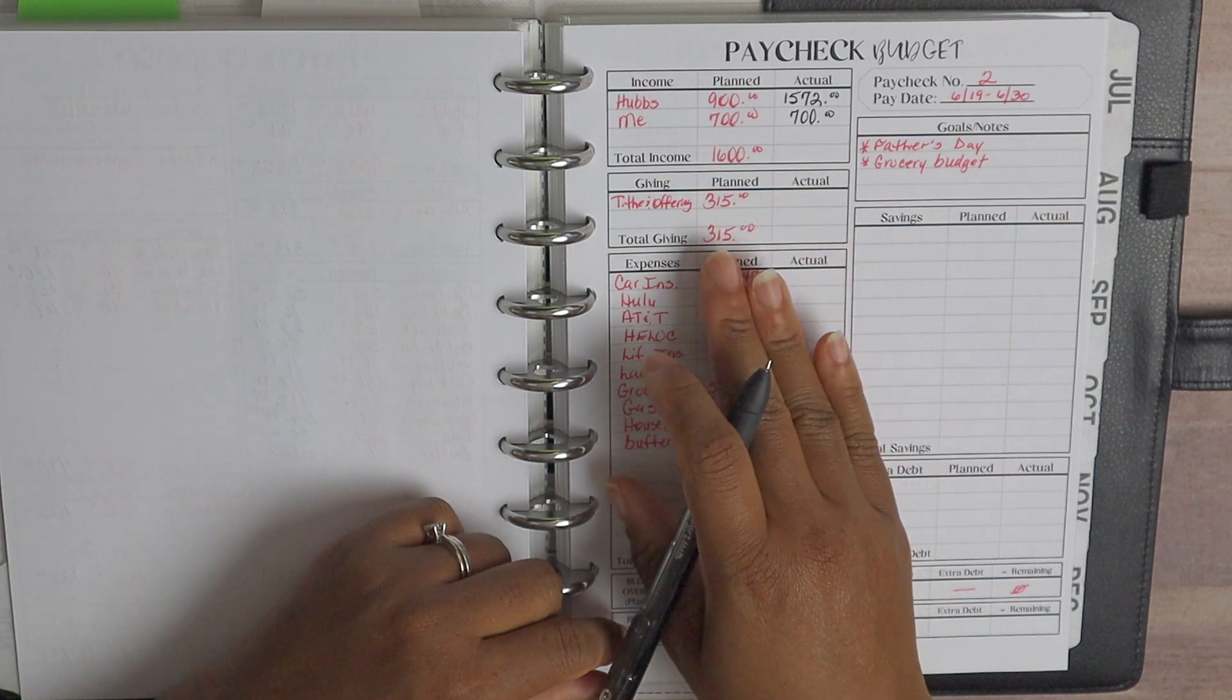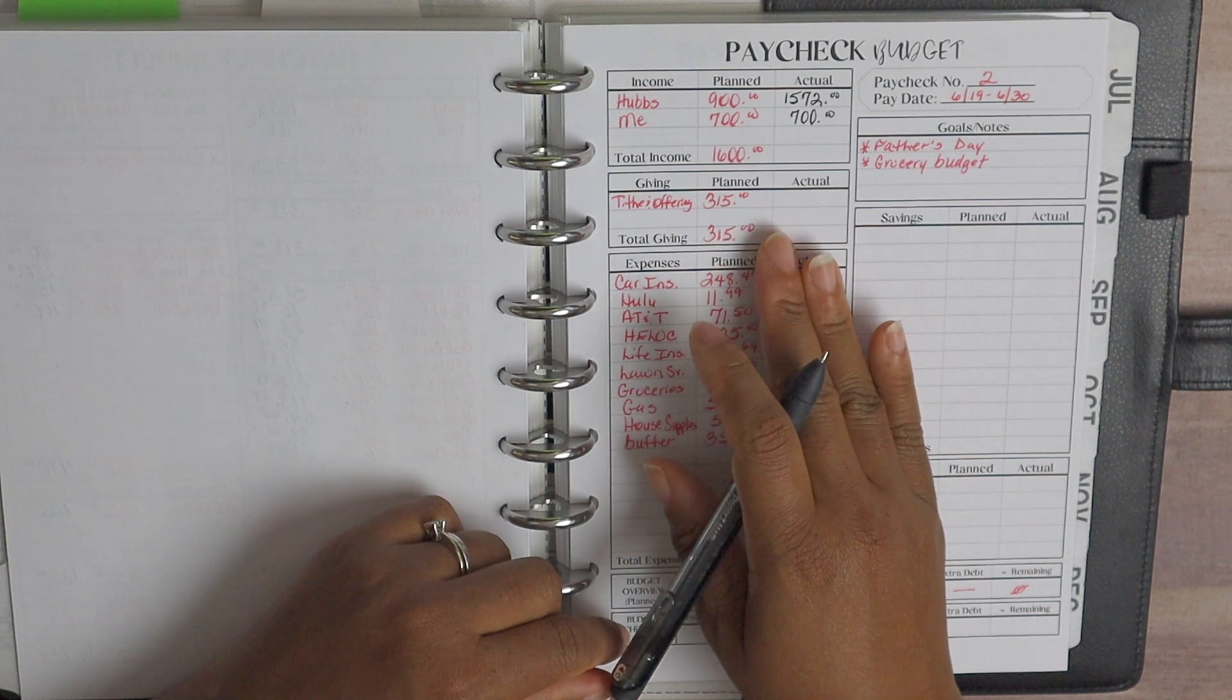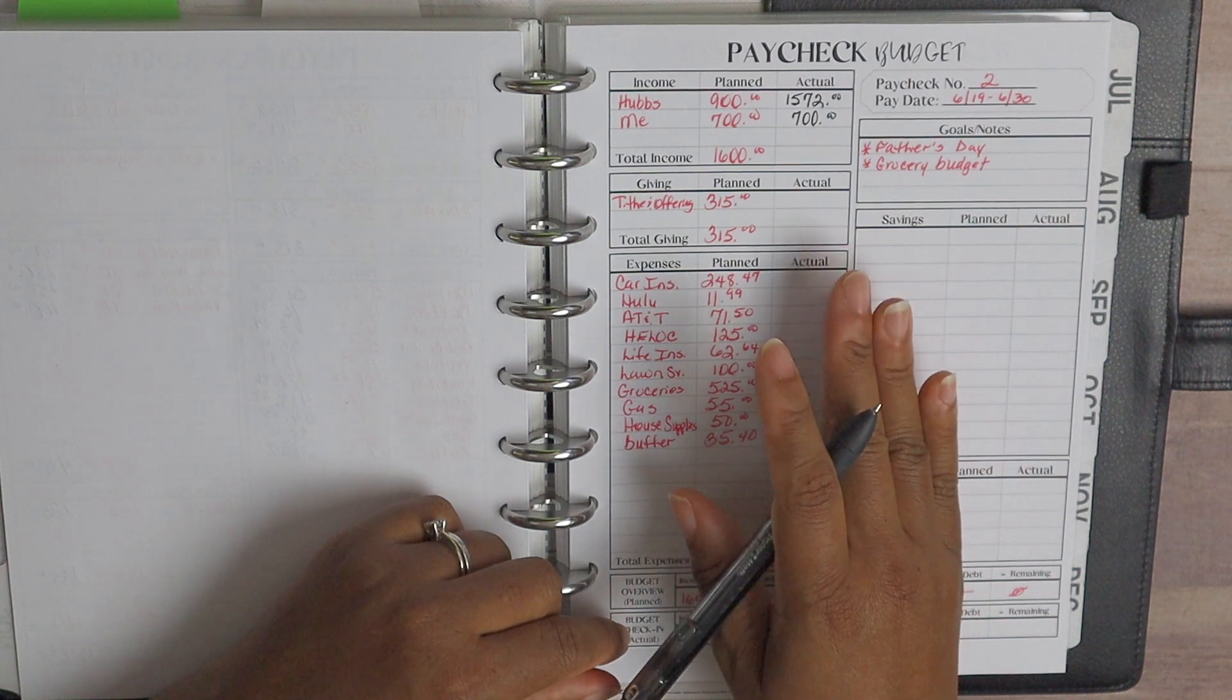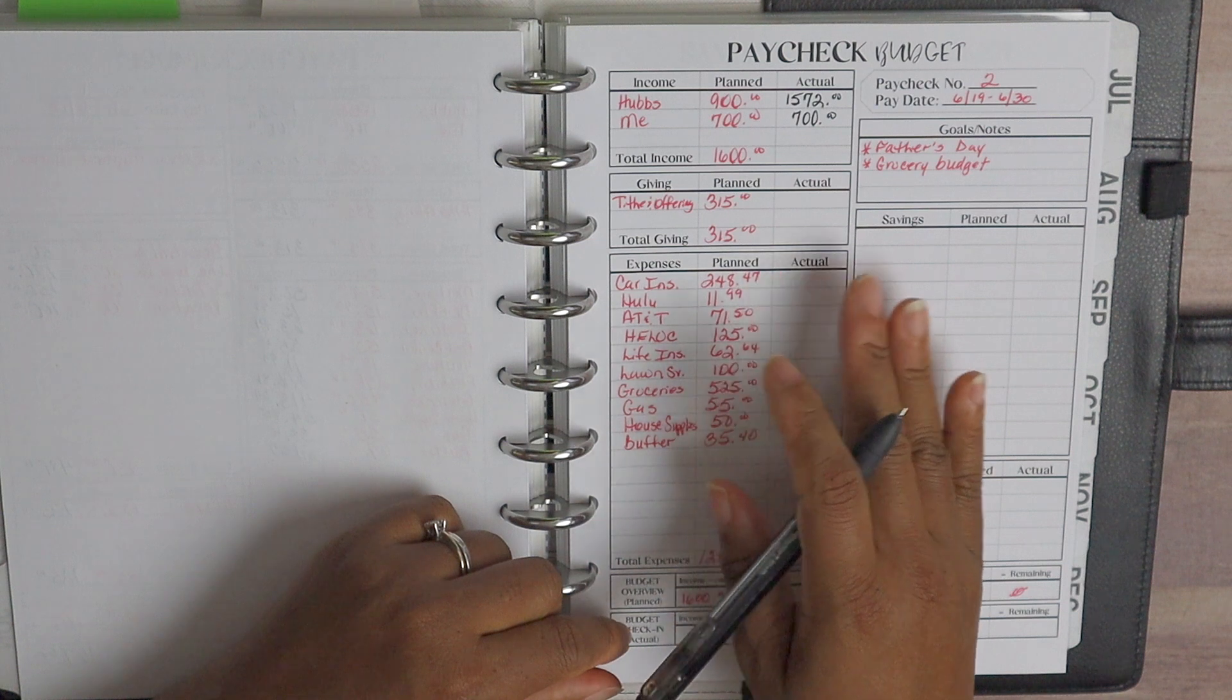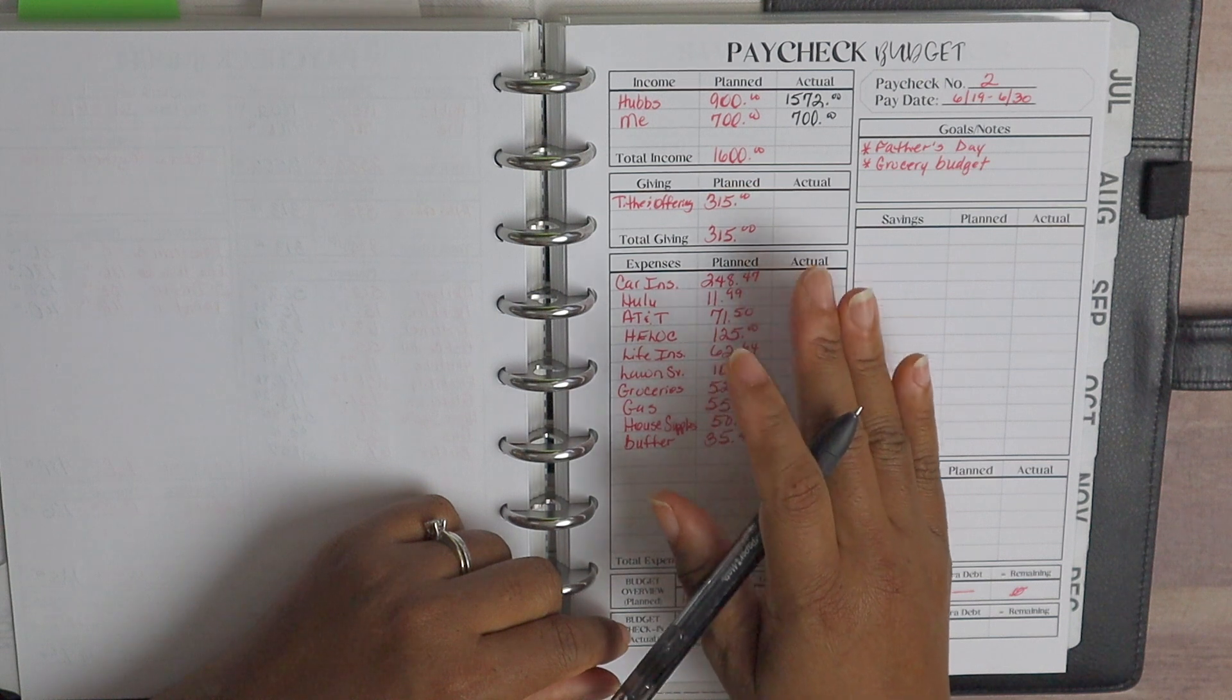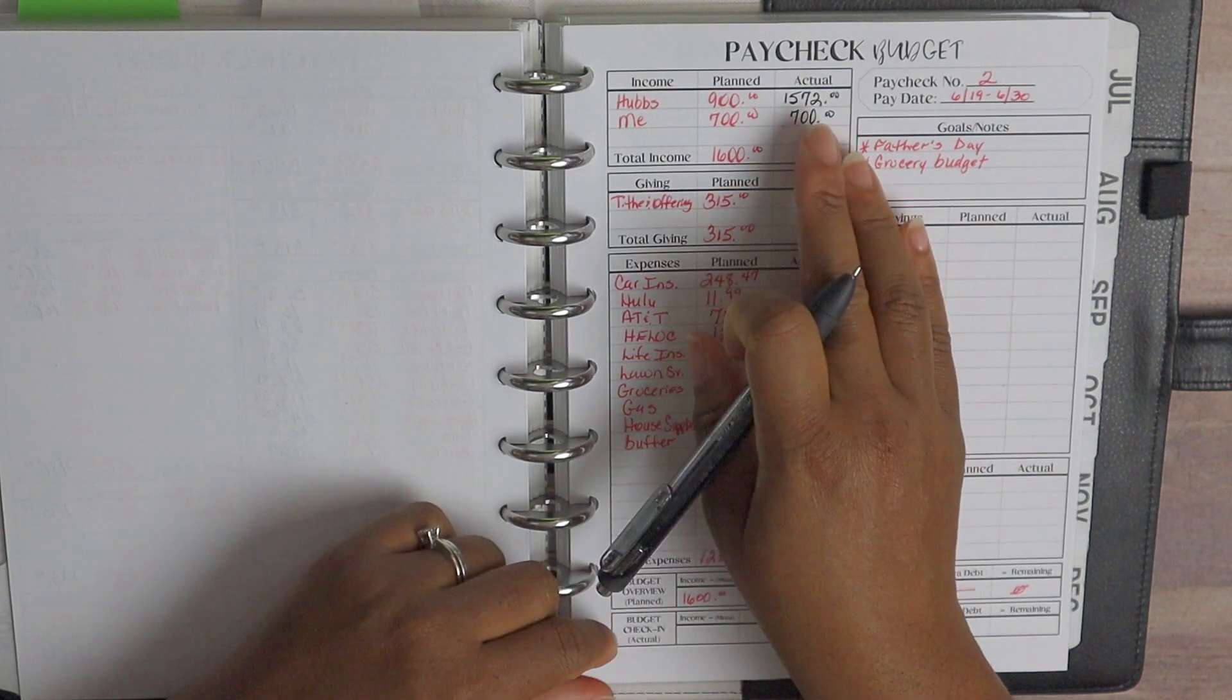So if there's anything that you don't see on our paycheck budgets or in our monthly budgets, especially with our saving funds slash sinking funds, that's because we take care of it out of our personal accounts or it's maybe something that we don't even deal with. So that's what we have been doing as of July 2019 and it has been working really well thus far.